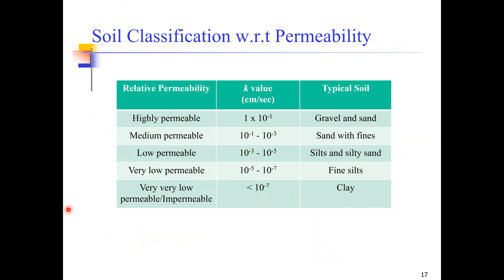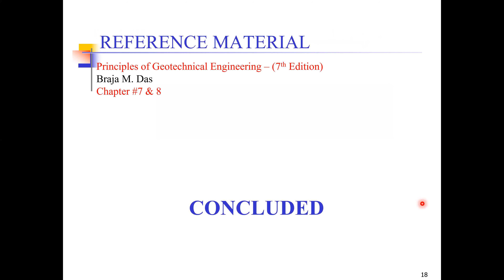The last thing is a summary of how we can classify different soils with respect to permeability. K is the coefficient of permeability of soil, generally expressed in units of velocity — distance per unit time. Coarse-grained soils have a higher K compared to fine-grained soils, which have much lower permeability. Finally, some references are provided which you can use to further your knowledge. Thank you very much.